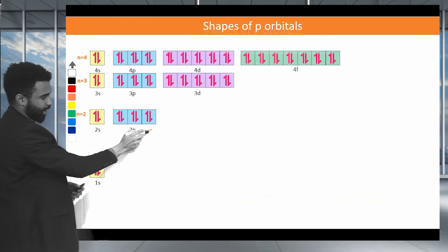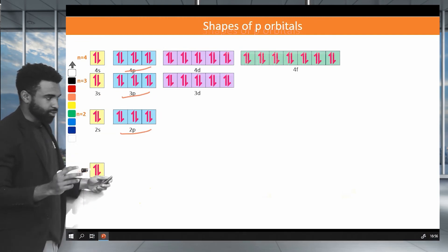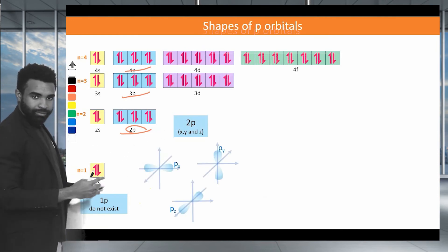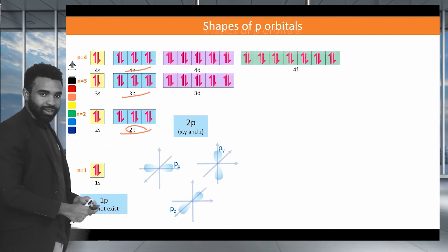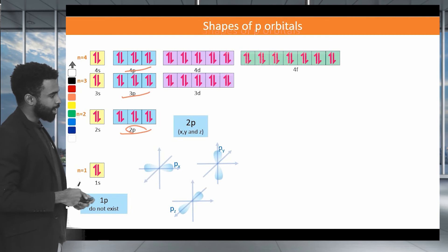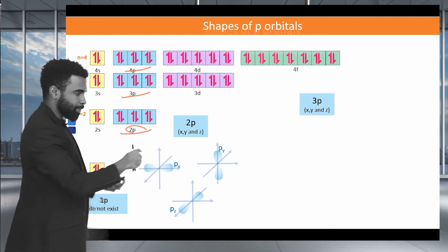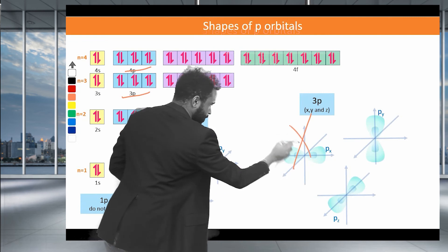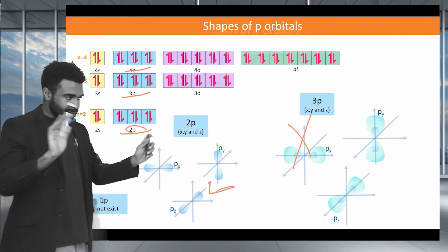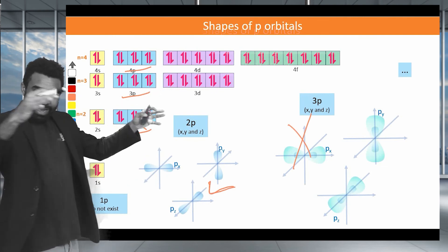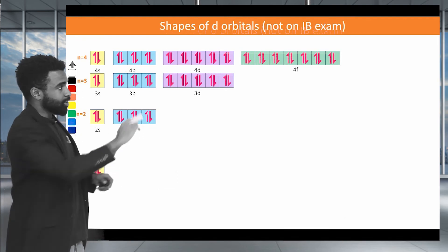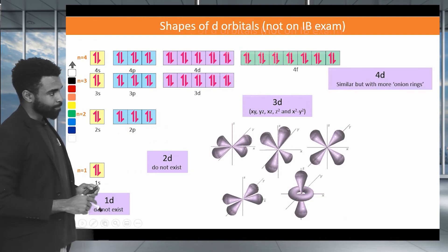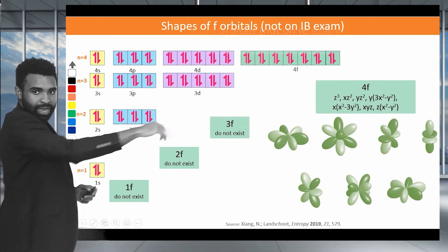The P orbitals: note that 1P does not exist. The 2px, 2py, and 2pz are dumbbells oriented along their respective axes at 90 degrees to each other. The 3p orbitals are also x, y, and z, but because they're level 3 they have that onion-layer pattern with multiple concentric regions. For the IB, you mainly need to know the 2p dumbbell shapes. The D and F orbitals — not required for IB — have increasingly complex shapes.